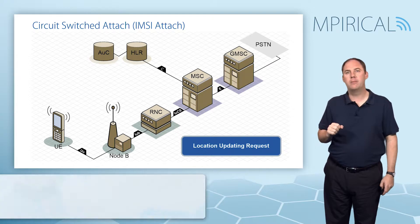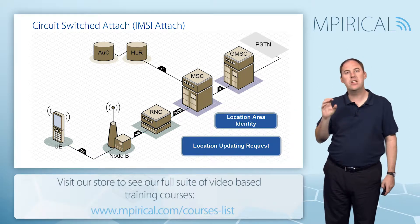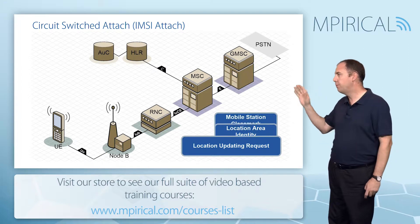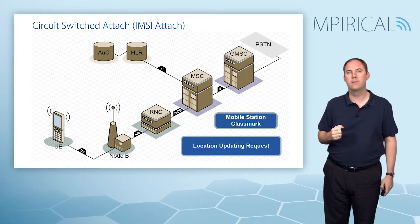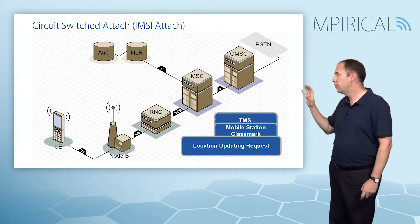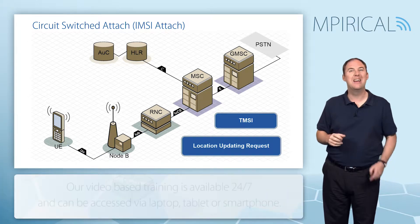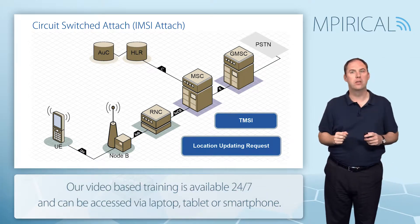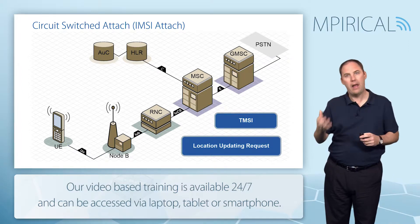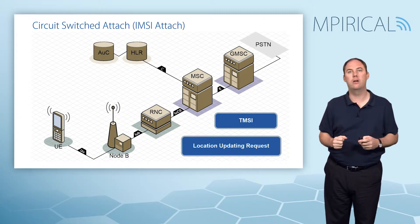Inside the location update request, I'd expect a few parameters. The first is the location area information — this is the old location information. The other parameter is the mobile station class mark, which describes the capabilities of the handset. Also included is the TMSI, the temporary mobile subscriber identity. This is the alias, and it's linked to the old location information — so if the alias was 'Fred', that alias was assigned in the old location and can be used to correlate who the subscriber actually is.